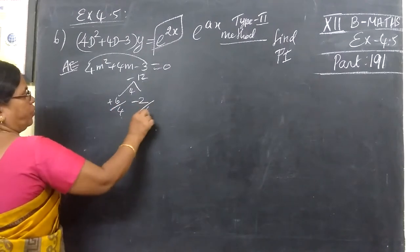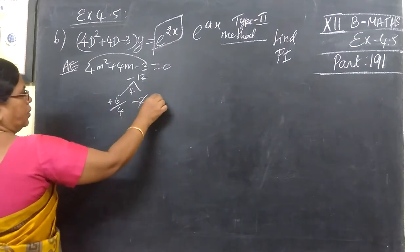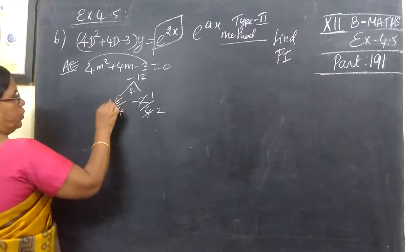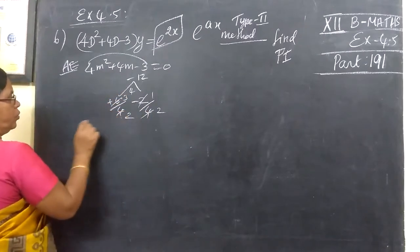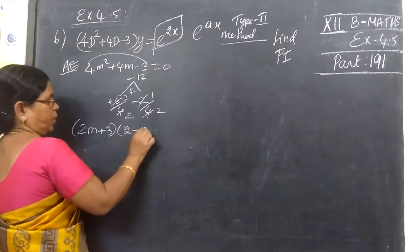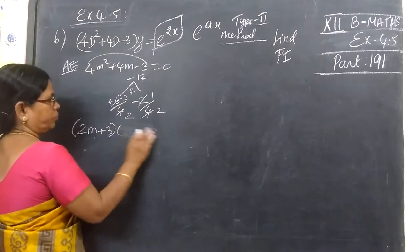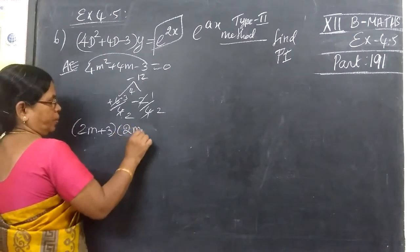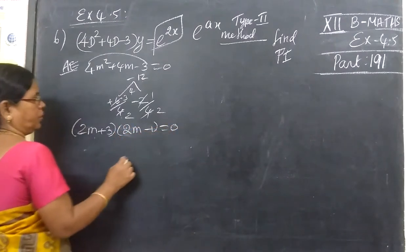This is the answer. This is 1, this is 2, this is 3, this is 2. So this is 2m plus 3, then 2 minus m. Sorry, 2m minus 1 equal to 0.